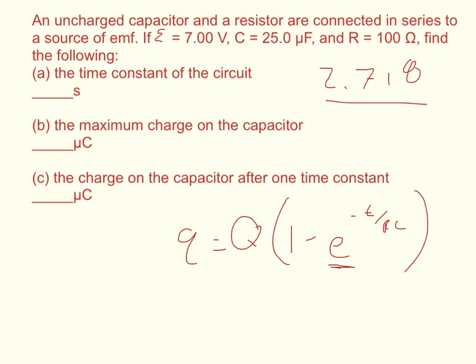In this equation, RC is replaced by tau, the time constant. So RC is the time constant, so to find the time constant, just multiply R times C. Now C has to be in farads, not microfarads, so you've got to times that by 10 to the negative sixth.